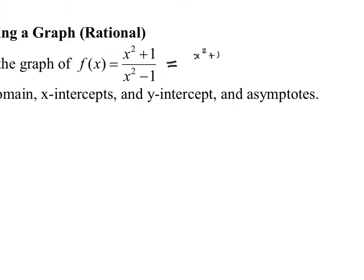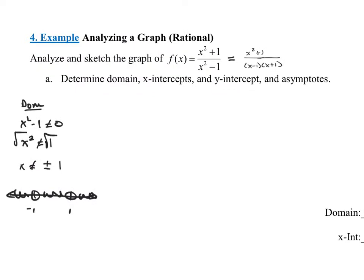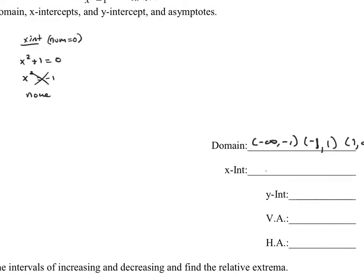The numerator x squared plus 1 is a sum of squares, which does not factor. The denominator is a difference of squares, which does factor, but the fraction does not simplify at all. Moving on to x-intercepts: after factoring and simplifying, x-intercepts occur when the numerator equals 0. Setting x squared plus 1 equal to 0 gives x squared equals negative 1, which has no real solution, so there are no x-intercepts.